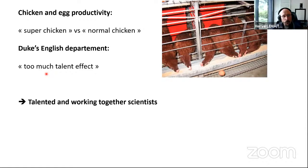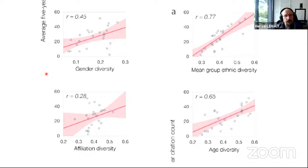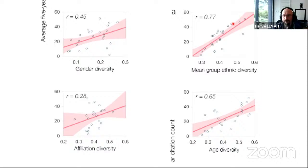The point is you need talented researchers, but you need researchers who work together. They looked at different variables that can affect teams: gender diversity, ethnic diversity, affiliation diversity, age diversity. The variable with the most impact on citation count was ethnic diversity. So again, if you put people with different cultural education and different points of view together, you will get a better team.